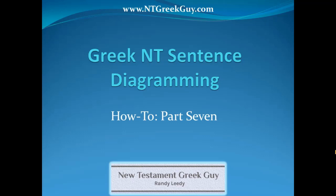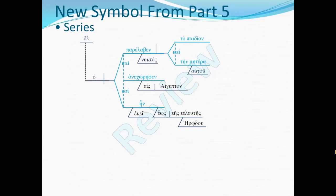Back in part five, we learned the symbols for series — branches used to show parallel construction of various kinds of series. You see them set in blue text here. There are two different series. The verbs are a series of three: parelabon, anakoresin, and ain. You see those here in this portion of the diagram. And parelabon has a series of two objects, and those appear here.